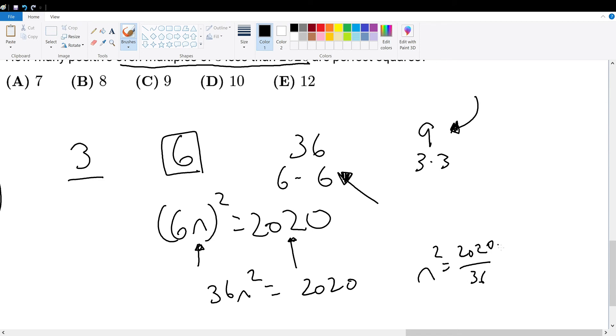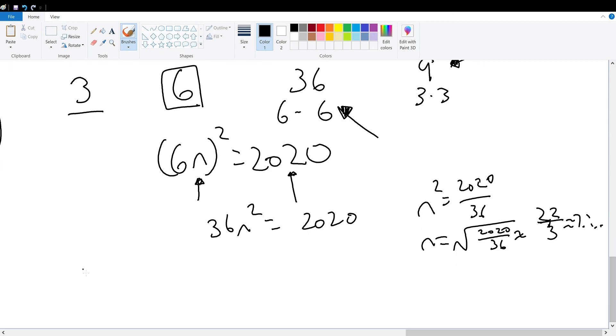So n equals the square root of 2020 over 36, which is around 22 over 3, which is a little bit over 7 something. So we know the answer for n is that n equals 7.